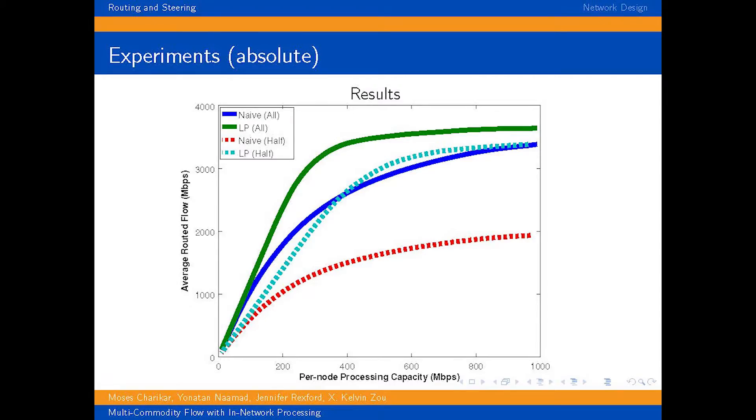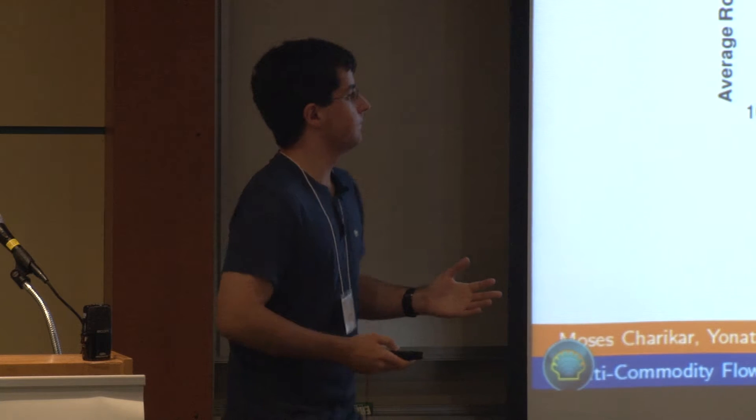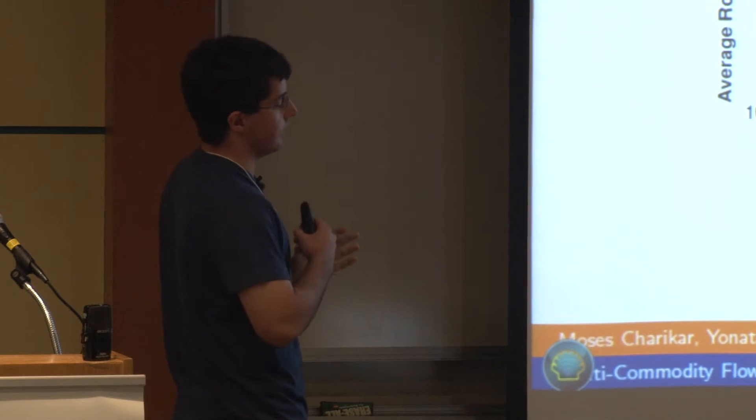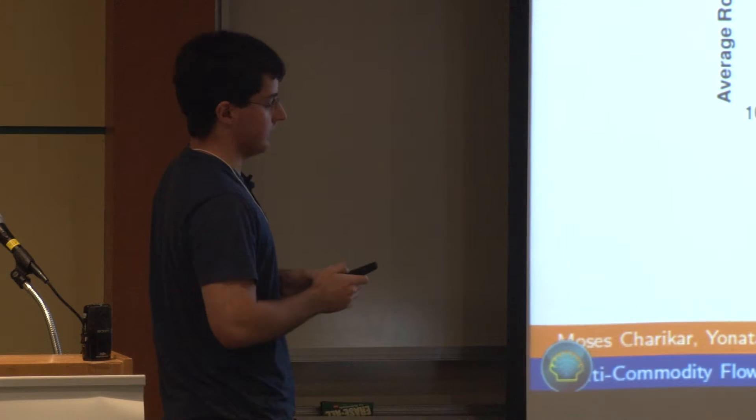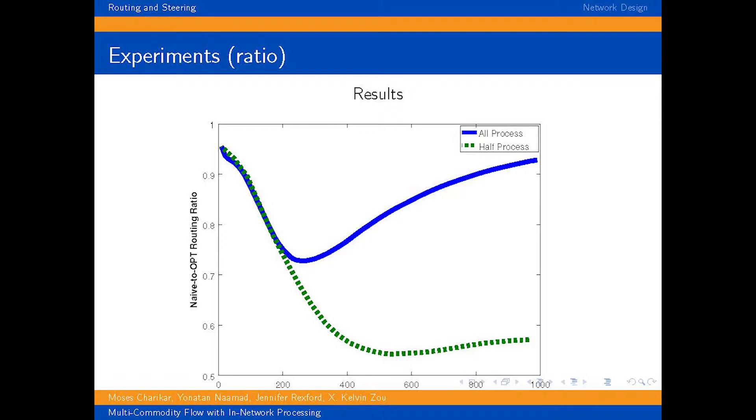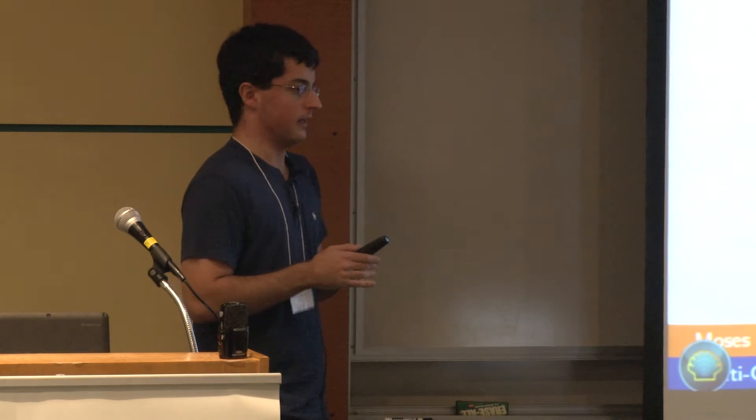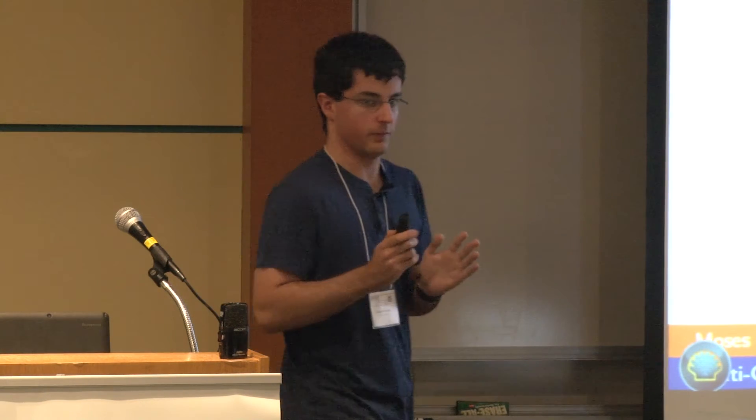And these are the results of the simulations. So the dashed lines correspond to the two algorithms when half of the vertices have processing capacity and half don't. The two solid lines correspond to the case when all vertices have processing capacity. And as you can see, when the processing capacity is non-trivial, there becomes a non-trivial gap between the two. And if we look at the ratio, we can see that both cases actually, at least in some regime, there is a gap of something like 25% between the two algorithms. So having an optimal algorithm might actually be useful in some cases.